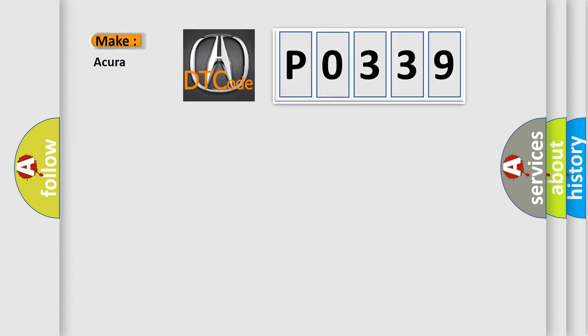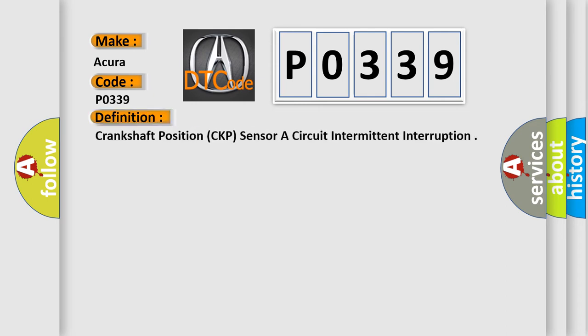So, what does the Diagnostic Trouble Code P0339 interpret specifically for the range of car manufacturers? The basic definition is Crankshaft Position (CKP) Sensor of Circuit Intermittent Interruption.